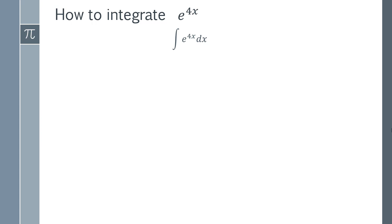It'd be a lot easier if it were just e to the x, because the integral of e to the x is simply e to the x. The difficulty here is dealing with that number 4. And the trick that you can use is you can come up with a substitution.